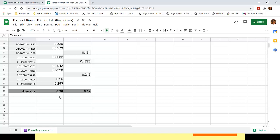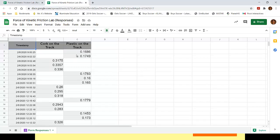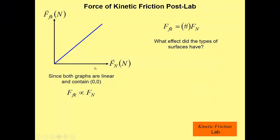Right, so definitely much more friction with the cork than there was with the plastic. But notice what that did. That different surface didn't change the shape of the graph. It still was linear, went through 0, 0.